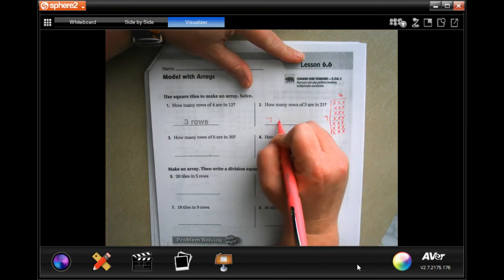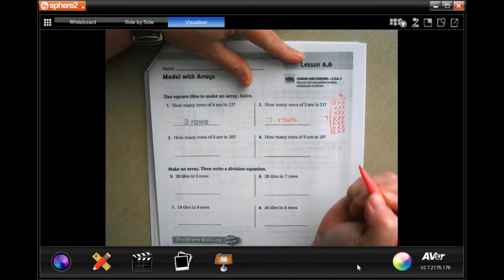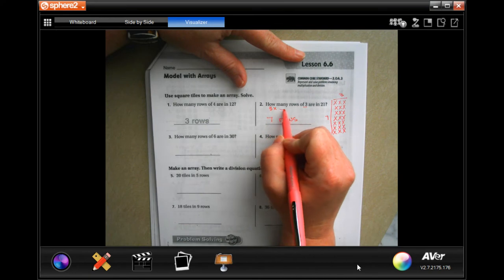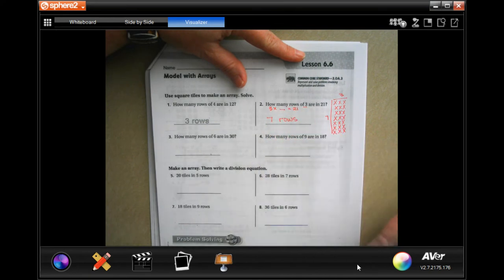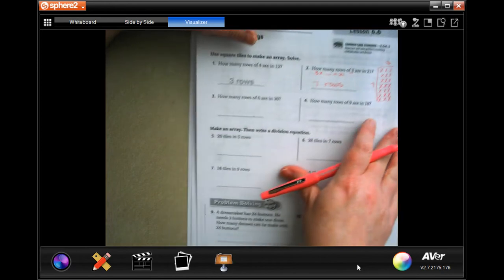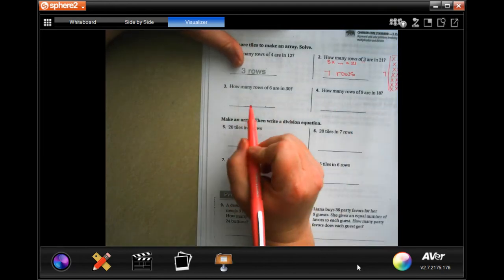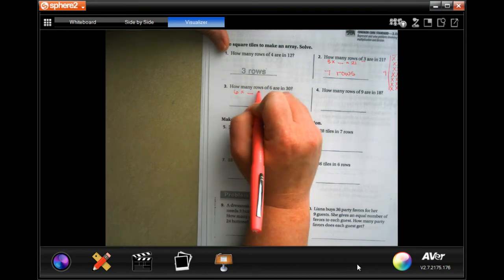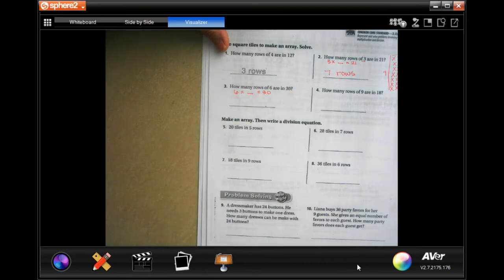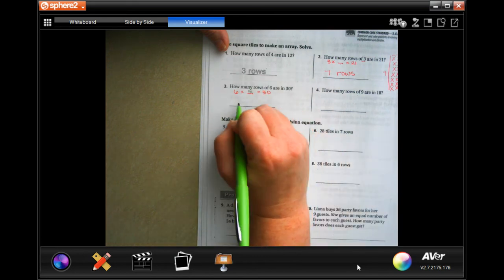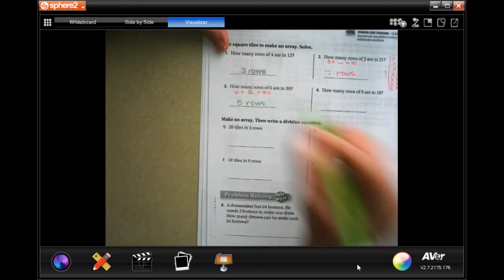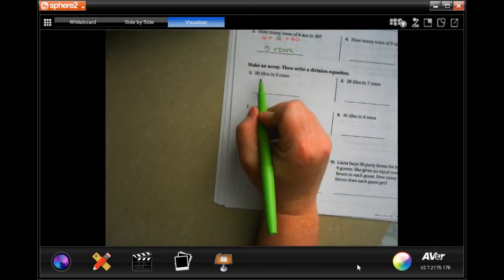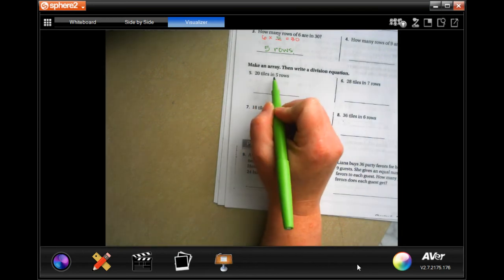Okay, the other way to go about this is to go three times what is 21? Well three times seven is 21. Okay, so that's what I'm going to do for the rest of it. Okay, so how many rows of six are in 30? Well six times what is 30? That's going to be five. Five rows.